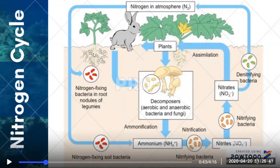So the nitrogen gets into these nodules and then it gets into the plants. Then the plants have assimilated that nitrogen in a form that can be used by living things to make proteins and nucleic acids, including DNA and RNA.